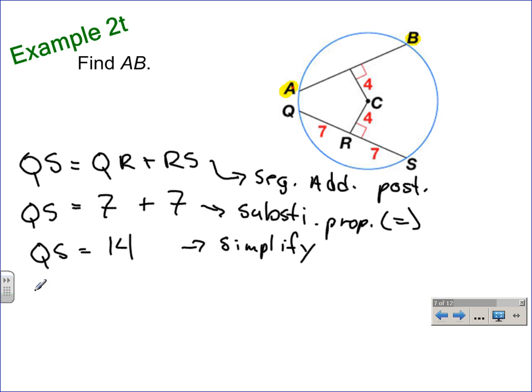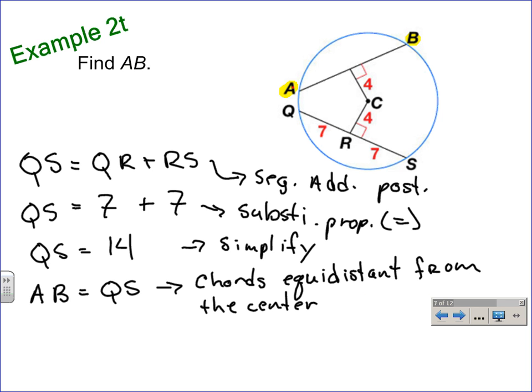Next, we would be able to state that AB is equal to, or the measure of chord AB is equal to the measure of chord QS. And that's because of the fact that chords equidistant from the center of a circle are congruent, which means they have an equal measure.